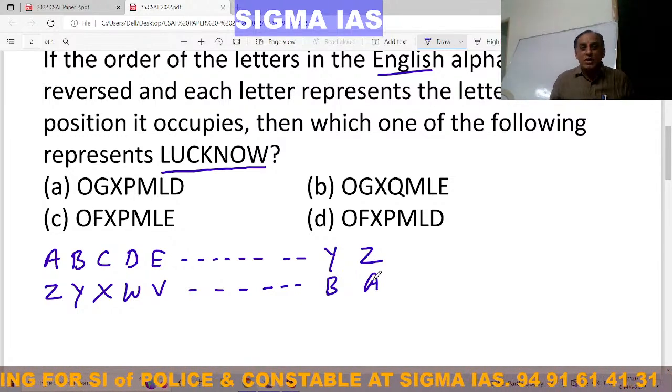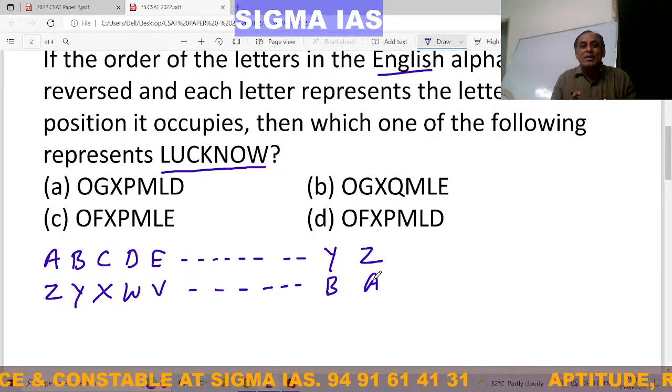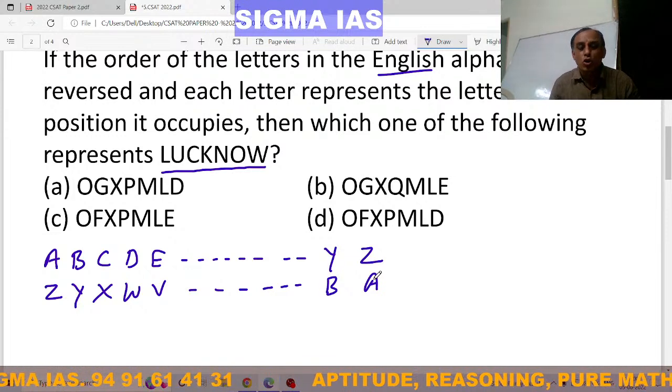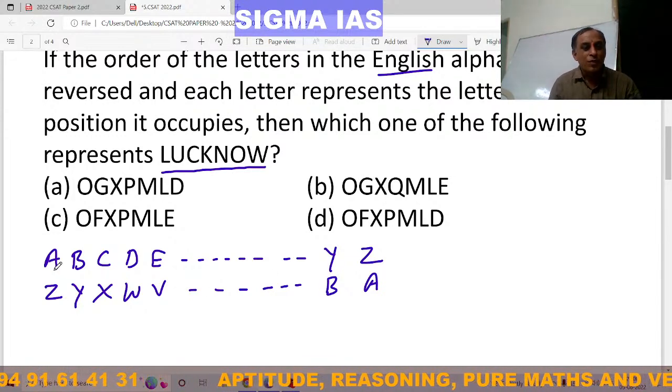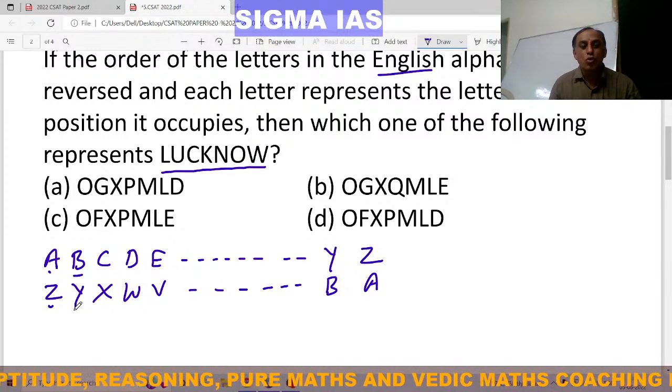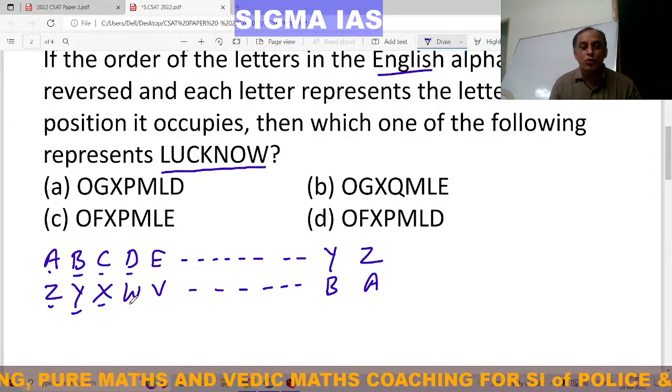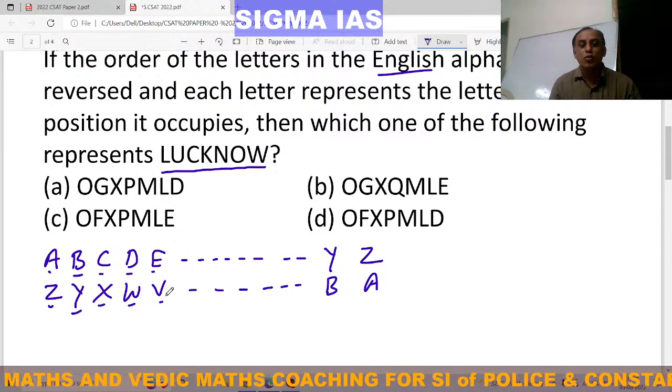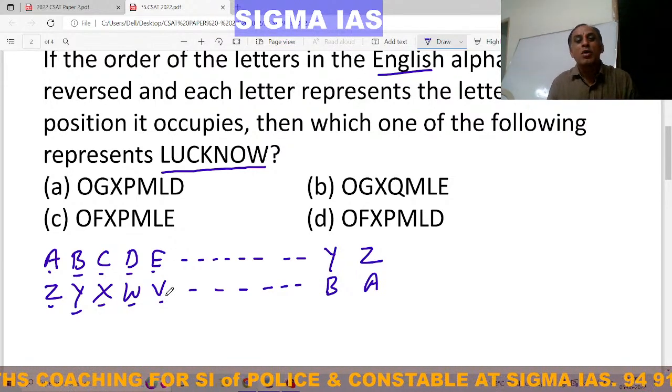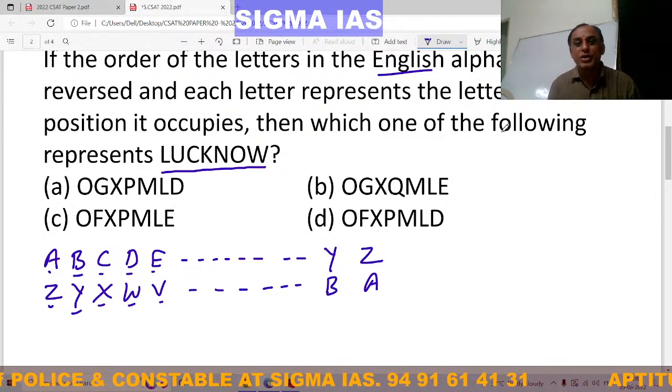So what is the question? If the order of the letters in English alphabet is reversed and each letter represents the letter whose position it occupies, it means A is coded as Z, B is coded as Y, C is coded as X, D is coded as W, E is coded as V. So this is the order. And also it is known as alphabet's reverse position letter.